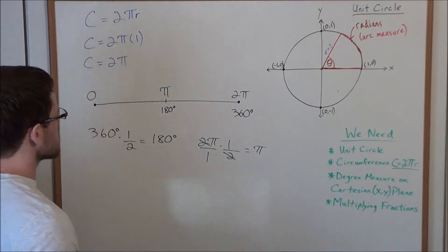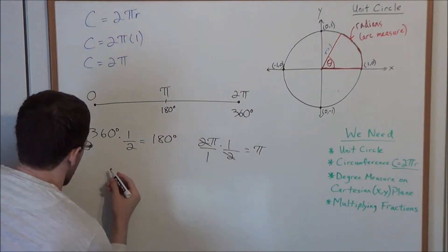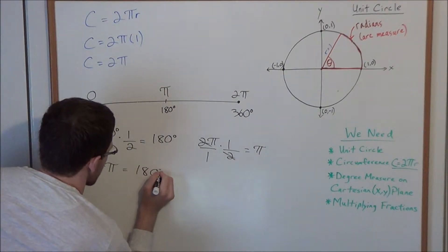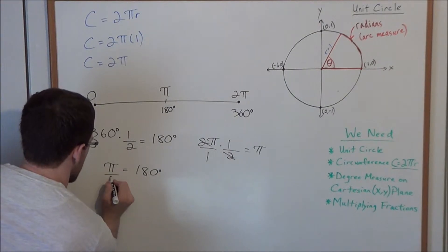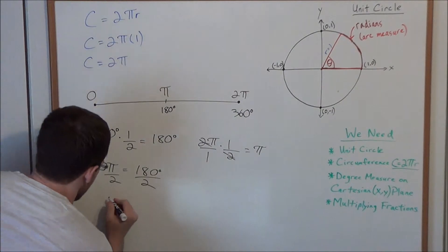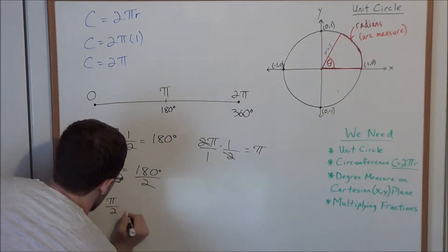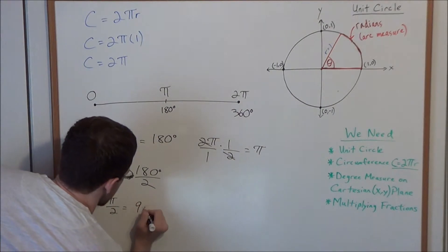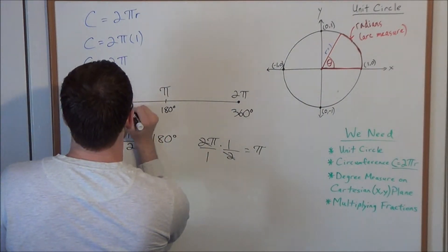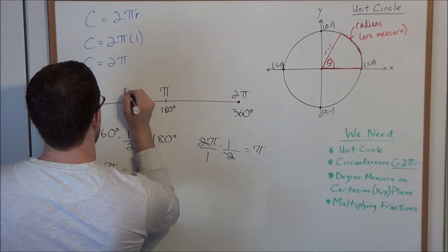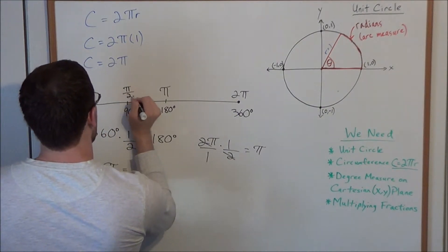Now we could also do this for other values. Let's say we're looking at π radians equals 180 degrees now, and let's say we divide both sides by 2, we treat it like an algebra equation. Well, this tells us that π/2 radians is equal to 180 degrees divided by 2, which is 90 degrees. So that means when we cut this segment in half, we're looking at 90 degrees and we're looking at π/2 radians.